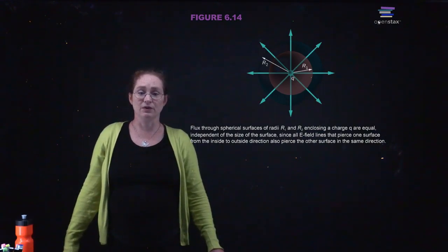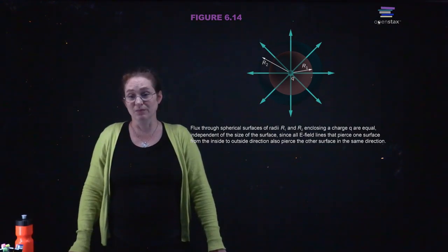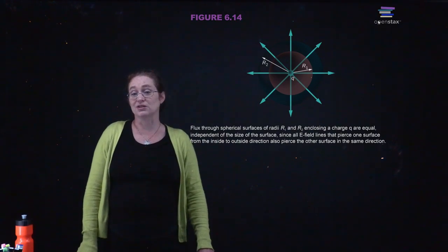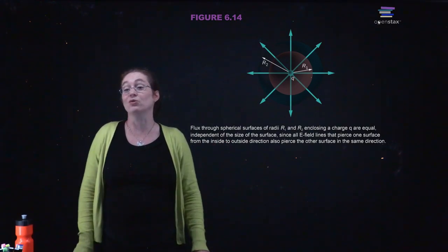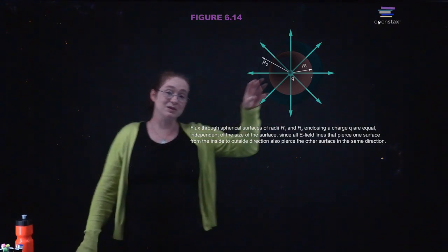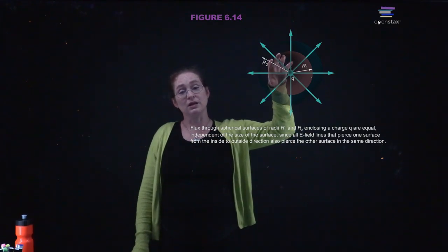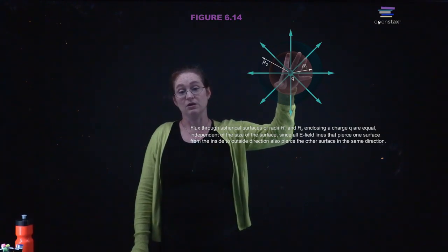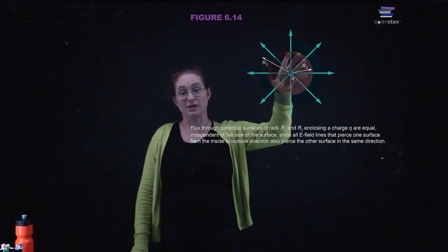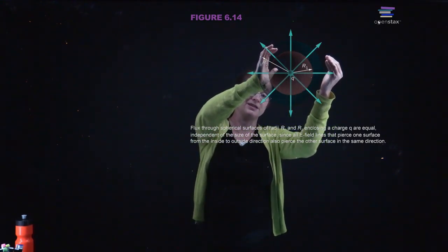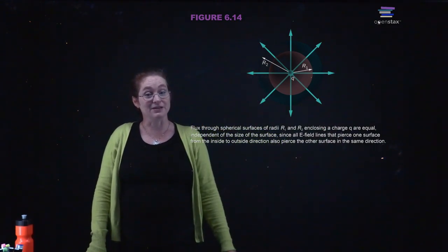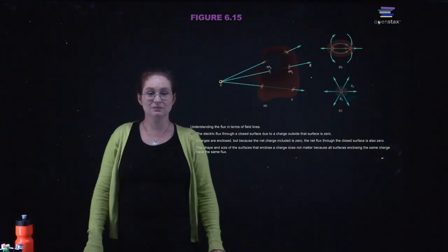Note that when we did that calculation, we didn't specify what radius we were integrating over — it turned out that no matter what radius you integrate over, you get the same answer. When you're closer to the charge the field is larger but the surface area is smaller; farther out the field is smaller but the surface area is larger. The flux is the same either way.